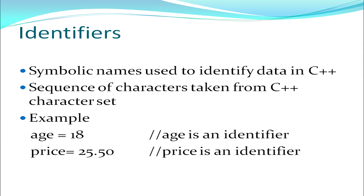Next we have identifiers. Identifiers are names used to identify data. When I am using a computer to store data — say I am storing data of students, I have to store the name, the age, marks, and so on — I have to differentiate this data by giving different names by which it will be identified. For example, age is 18 years. These identifiers are formed from the C++ character set only — only those characters acceptable by the C++ language.